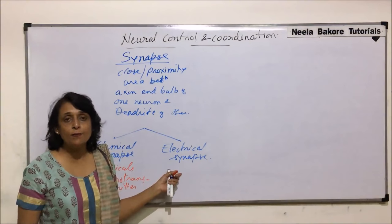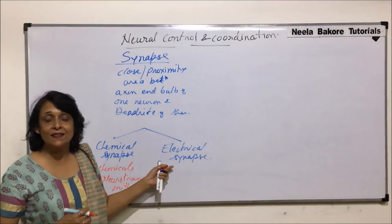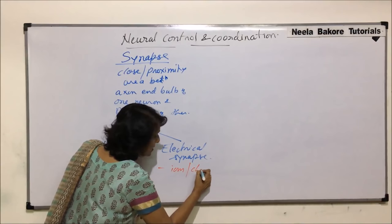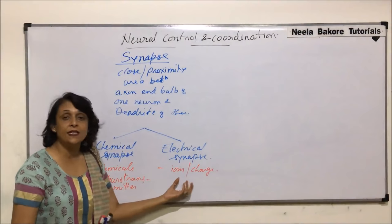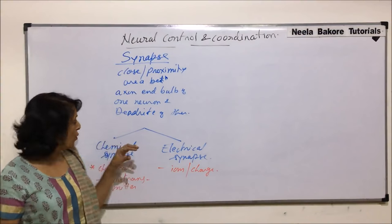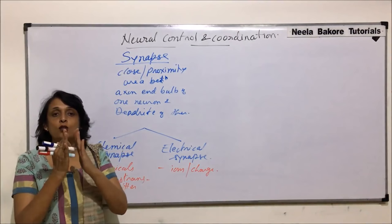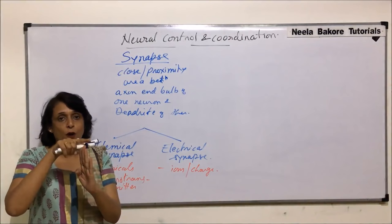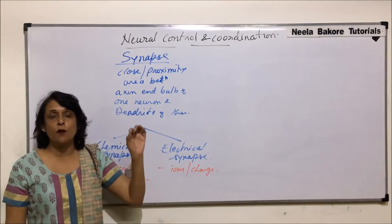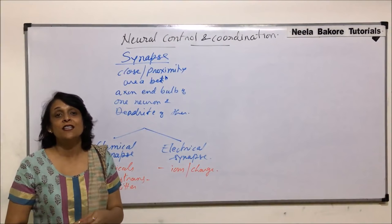These chemicals are known as neurotransmitters. In an electrical synapse, the impulse jumps from the axon end membrane to the membrane of the dendrite, traveling in the form of ions or charge. The basic difference is due to space: the space between the two neurons is more in chemical synapse and less in electrical synapse, so in electrical synapse the impulse can jump directly — exactly like saltatory conduction from one node of Ranvier to the other.